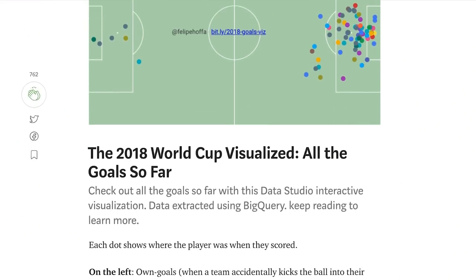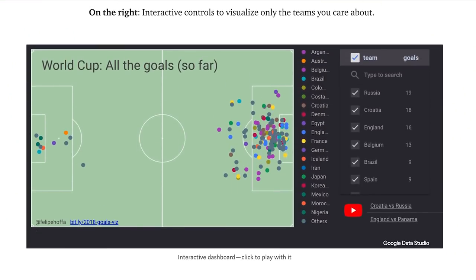Yes. So Data Studio works very well with BigQuery. An example would be a dashboard that Felipe, one of our developer advocates, created based on the FIFA World Cup data set. He took the data from BigQuery, connected with a Data Studio dashboard, and then he took the dashboard and published it in a Medium blog post. So you can go into his Medium blog post, see the dashboard, interact with it, and see what countries scored which goals where. And it works seamlessly.